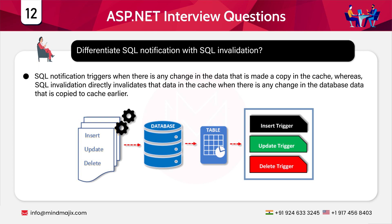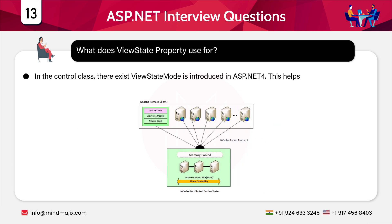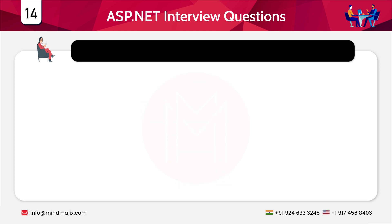The next question is: differentiate between SQL notification and SQL invalidation. SQL notification triggers when there is any change in the data that is copied in the cache, whereas SQL invalidation directly invalidates the data in the cache when there is any change in the database data that was previously copied to the cache. The next question is: what does the view state property use in the control class? There exists a ViewState mode introduced in ASP.NET 4, which helps work with the view state of a control even if it is disabled on the web page.